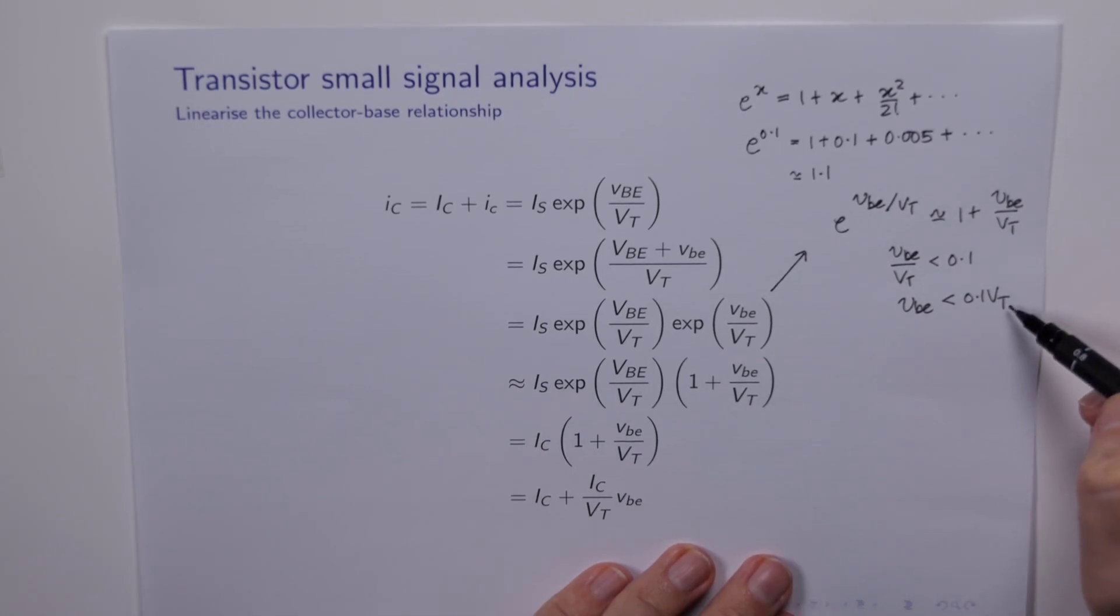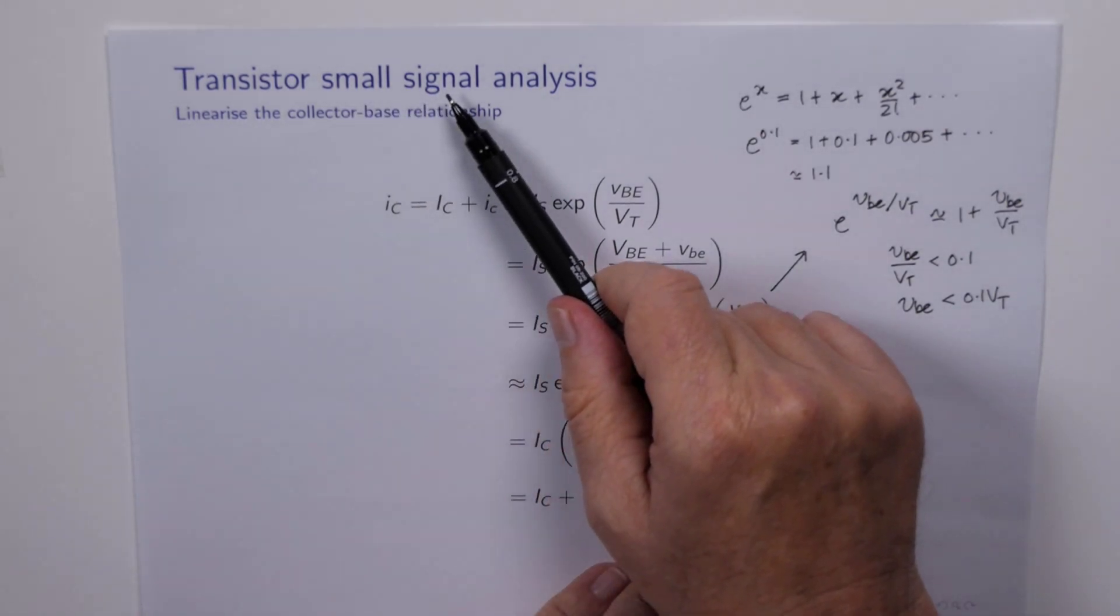Now remember that VT is in the order of 25 or 26 millivolts, so that means that VBE needs to be less than 1 tenth of that, or in the order of 2.5 to 2.6 millivolts. So that's what we mean by a small signal.